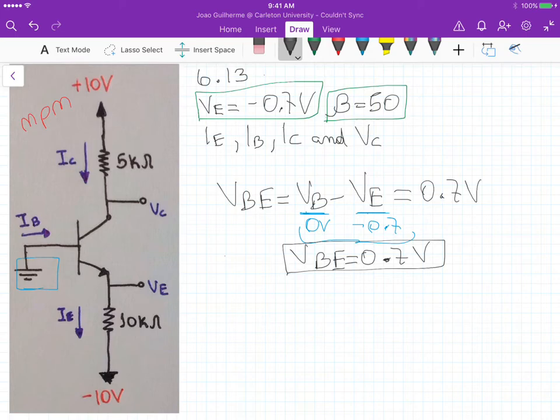Now, because we know that VE is minus 0.7 and VB is equals to 0, we know that this potential here at VE is minus 0.7 volts. We also know that at this terminal here, we have minus 10 volts. So basically, we know the potential at this terminal of the resistor and at this terminal here of the resistor.